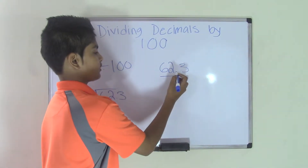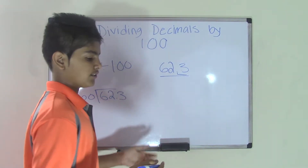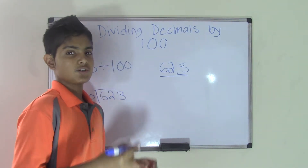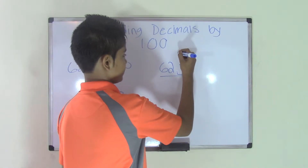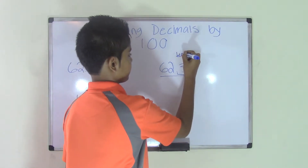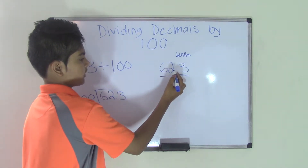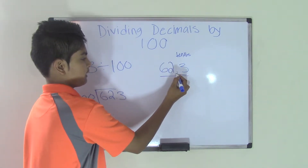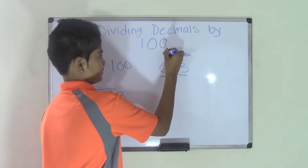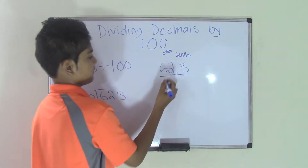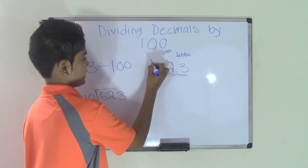So 3 — the number right after the decimal point is in the tenths. So 3 is in the tenths — 3 tenths. And now we have the 2. The 2 is the number right before the decimal point, which will be the ones. And now the 6 — the 6 is the number right before the ones, so that will be the tens.